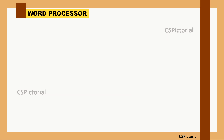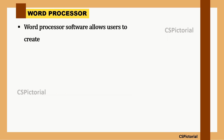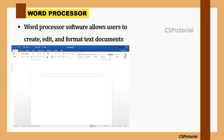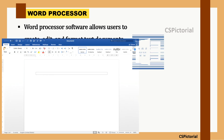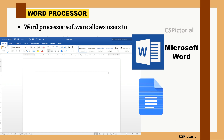A word processor is an application software that allows users to create, edit, and format text in documents. These programs offer features for text manipulation, adding images and tables, and checking spelling and grammar, thereby helping users produce professional documents. The home page of MS Word looks like this. Microsoft Word and Google Docs are some examples of word processing software.